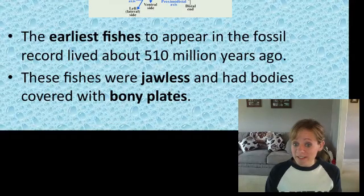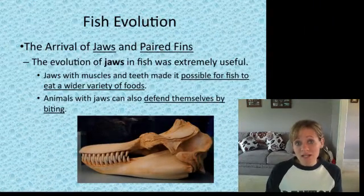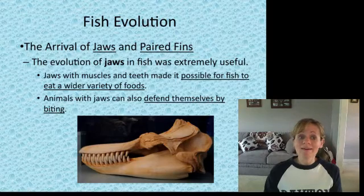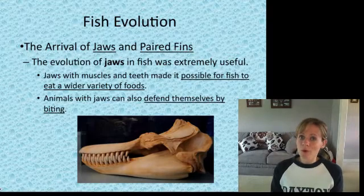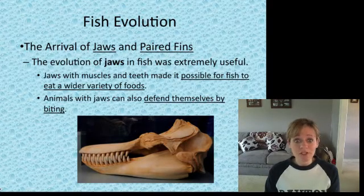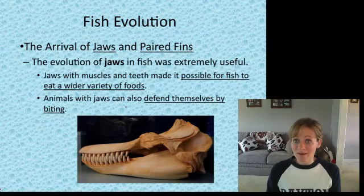We're going to learn about three different types of fish. The earliest type was jawless and covered in bony plates, but they evolved and adapted to their environment. They eventually got jaws and paired fins. The jaws were especially helpful — with muscles, teeth, and eating a wider variety of food, maybe starting to become predators, and also able to defend themselves by biting. Here's a fossil showing the teeth and jaw. Paired fins probably helped with mobility and escaping predation.